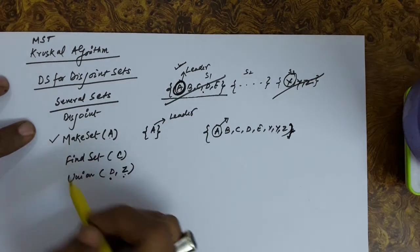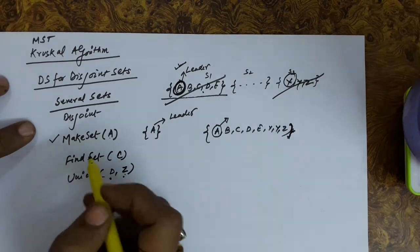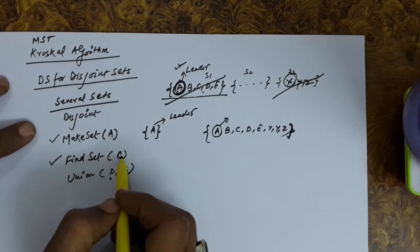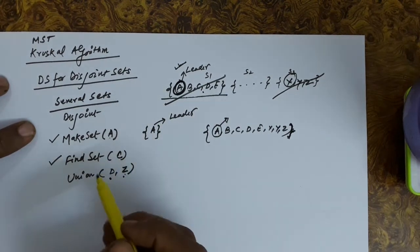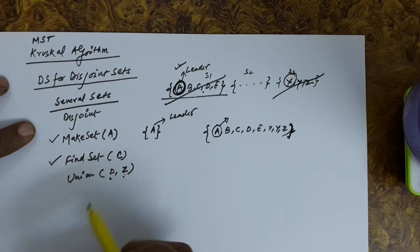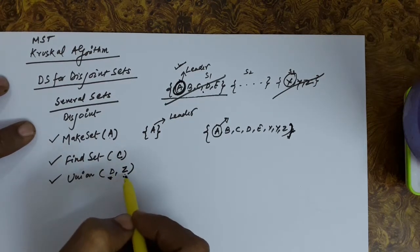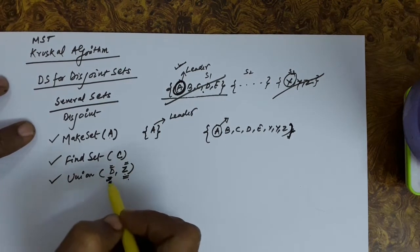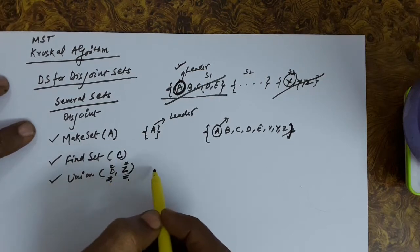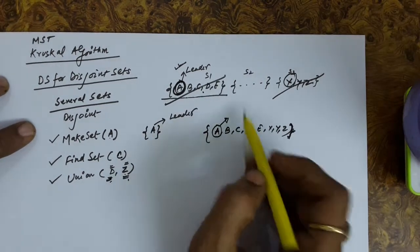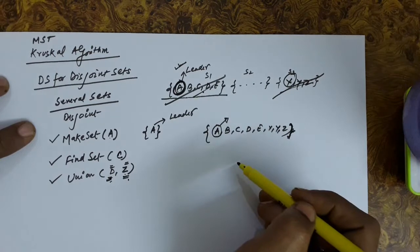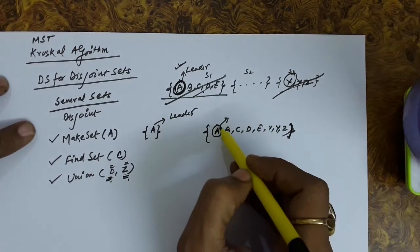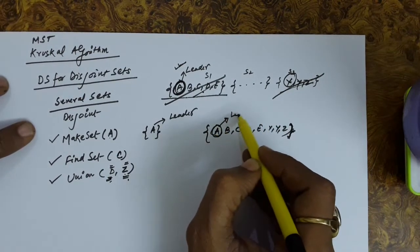So we have three operations: make set, which creates a set and sets the leader; find set, which finds which set a given element is present in and returns the leader of that set; and union, which unites two sets — finding the set containing each element, computing the union, destroying the original sets, and setting one element as the new leader.